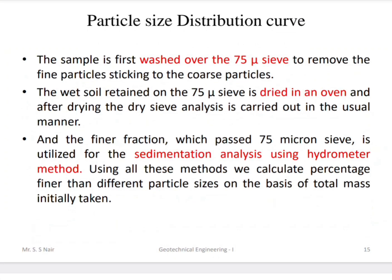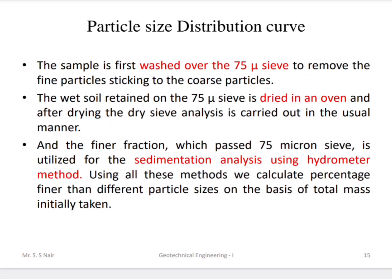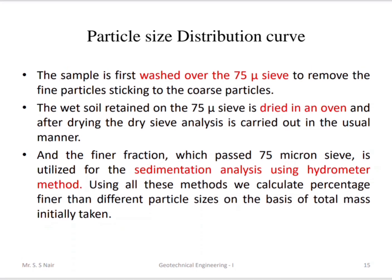First, we wash the sample over a 75-micron sieve to remove fine particles stuck to the coarser fraction. The wet soil retained on the 75-micron sieve is then dried in the oven, and dry sieve analysis is carried out. The finer fraction that passes 75 microns is used for sedimentation analysis using the hydrometer method. Using all these methods, we calculate the percentage finer than different particle sizes based on the total mass initially taken.